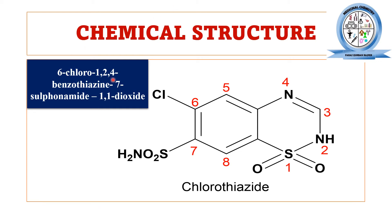The chemical name of chlorothiazide is 6-chloro-1,2,4-benzothiazine-7-sulfonamide 1,1-dioxide. To understand the chemical structure, first you draw the benzene ring, then the thiazide ring nucleus — a heterocyclic ring containing two nitrogen atoms and one sulfur atom, with sulfur and nitrogen adjacent. Numbering starts from the sulfur atom as position one, with the adjacent nitrogen as position two, continuing up to eight.